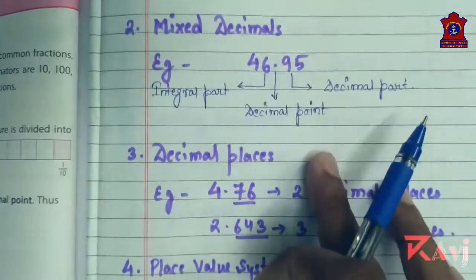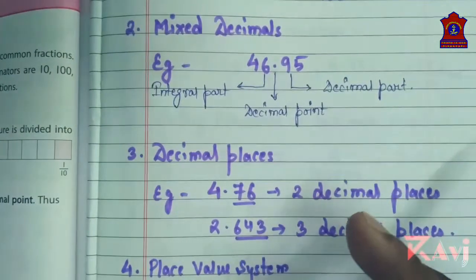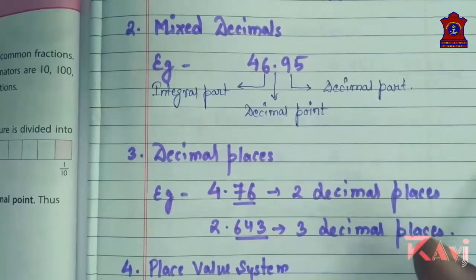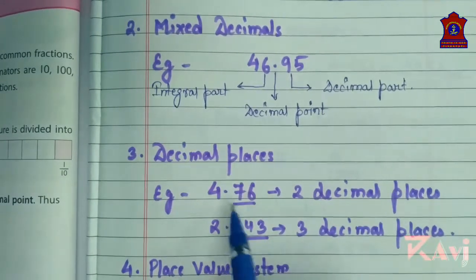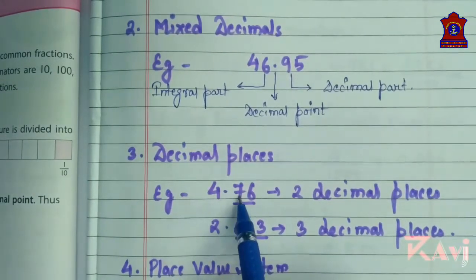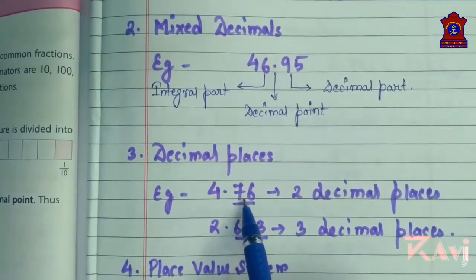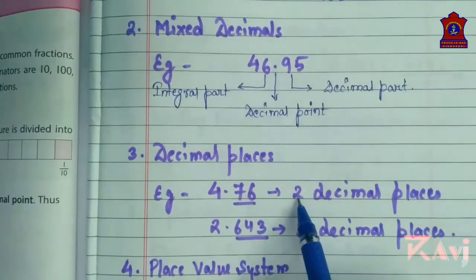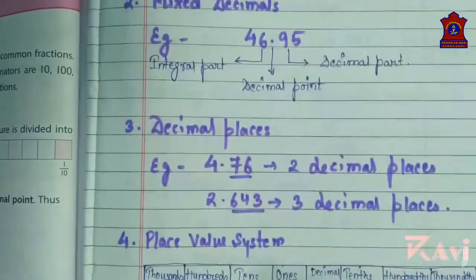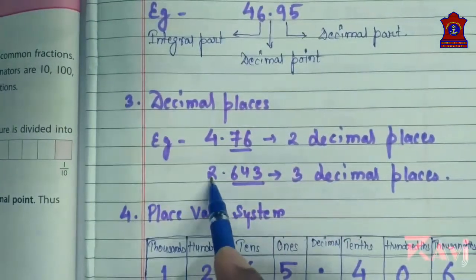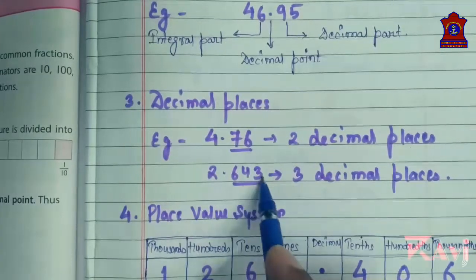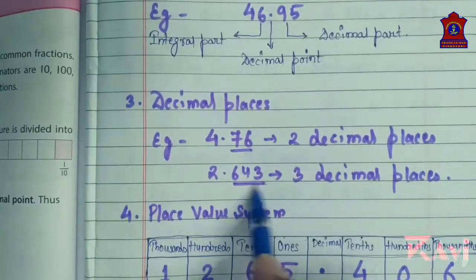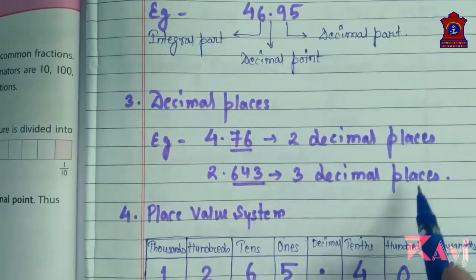Third is decimal places. The places after the decimal point are called decimal places. For example, 4.76 — how many digits are there after the decimal? There are 2 digits, so we say 2 decimal places. In 2.643, how many digits are there after the decimal? 3, so 3 decimal places.